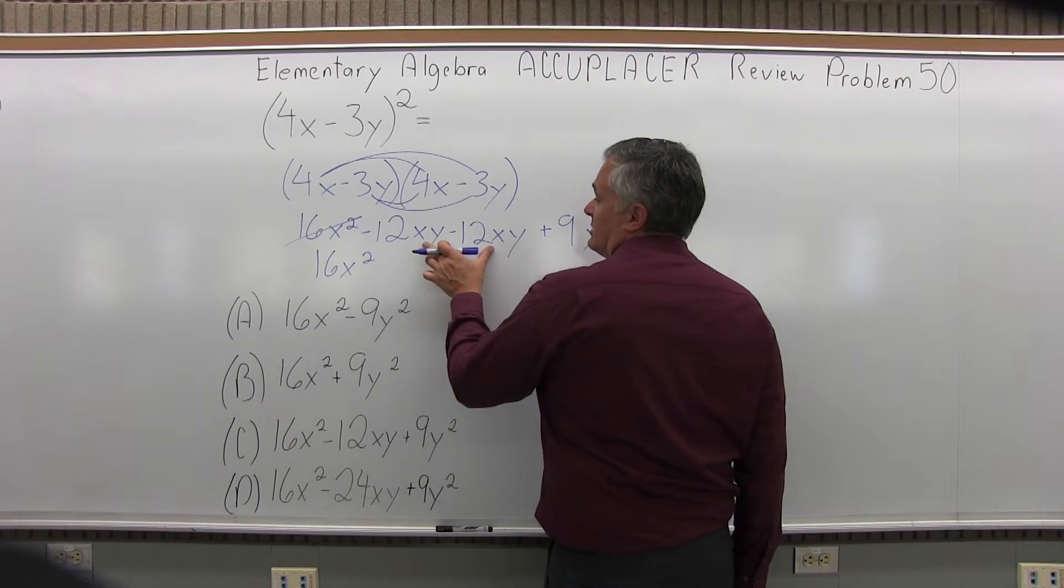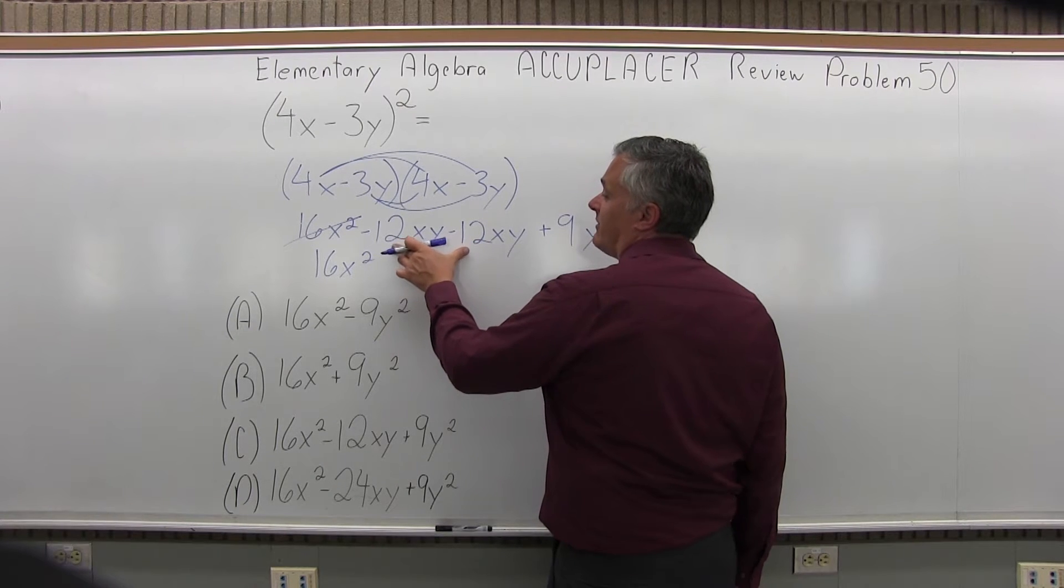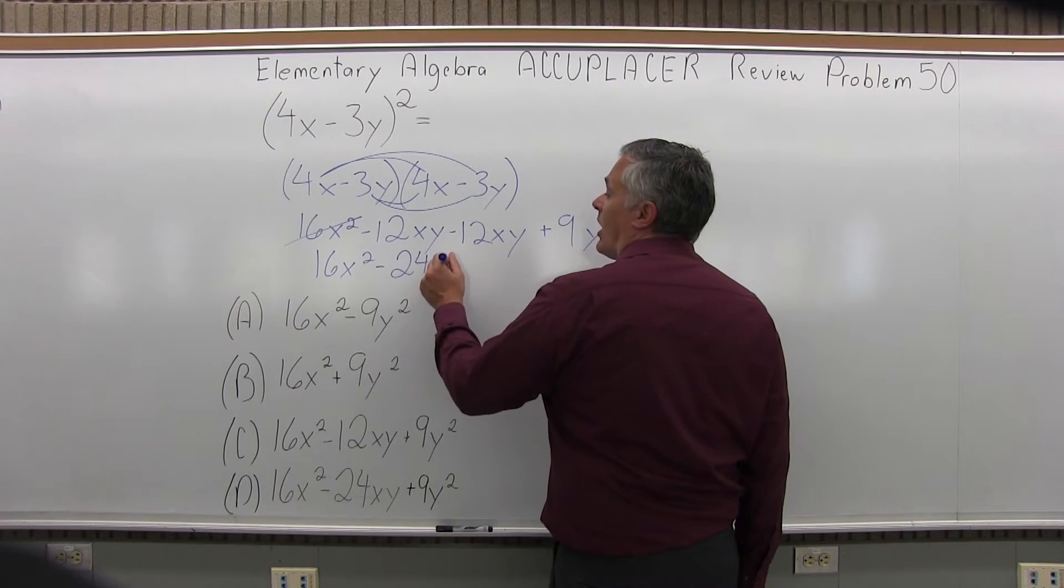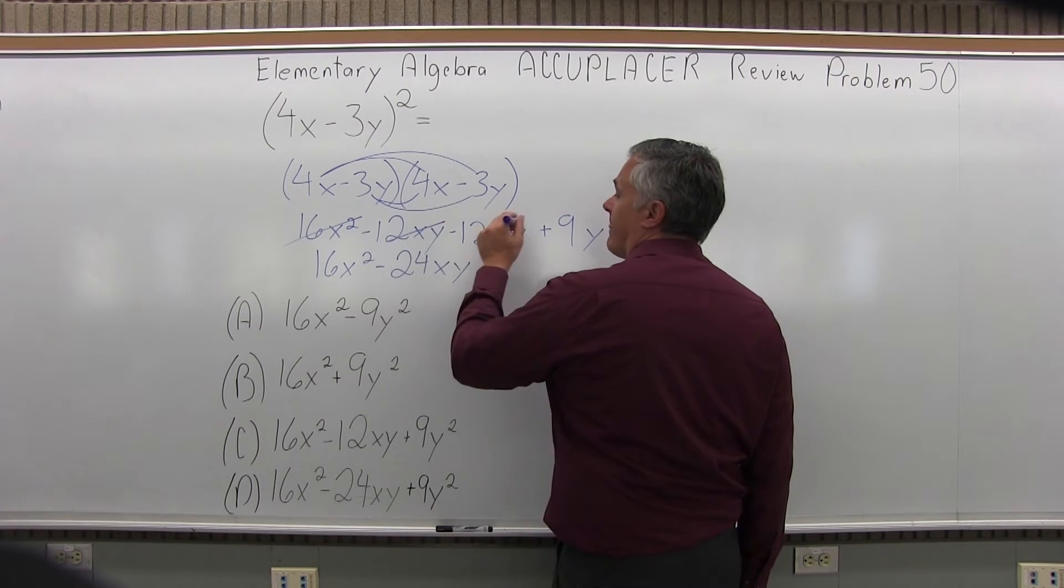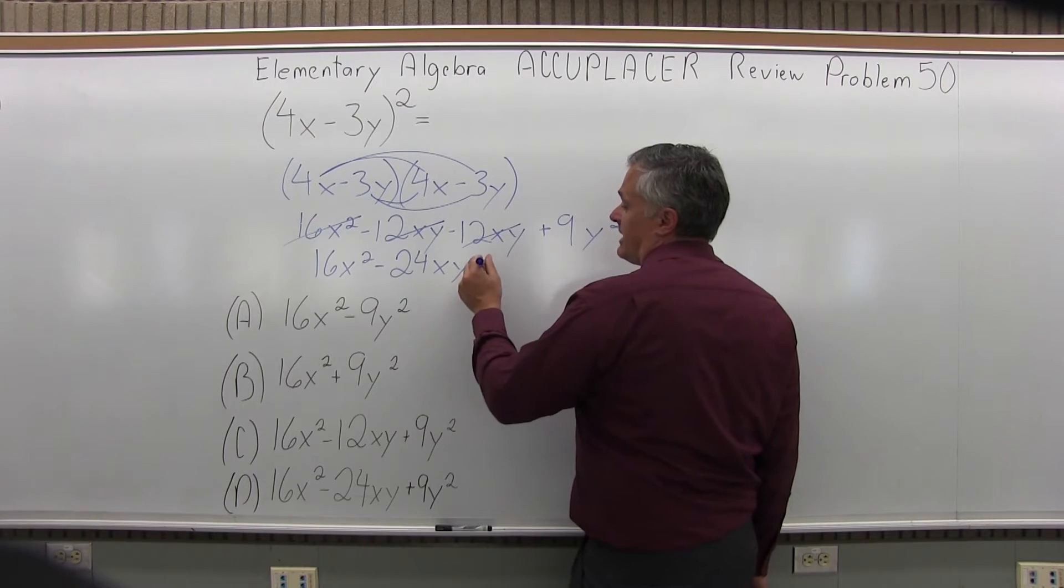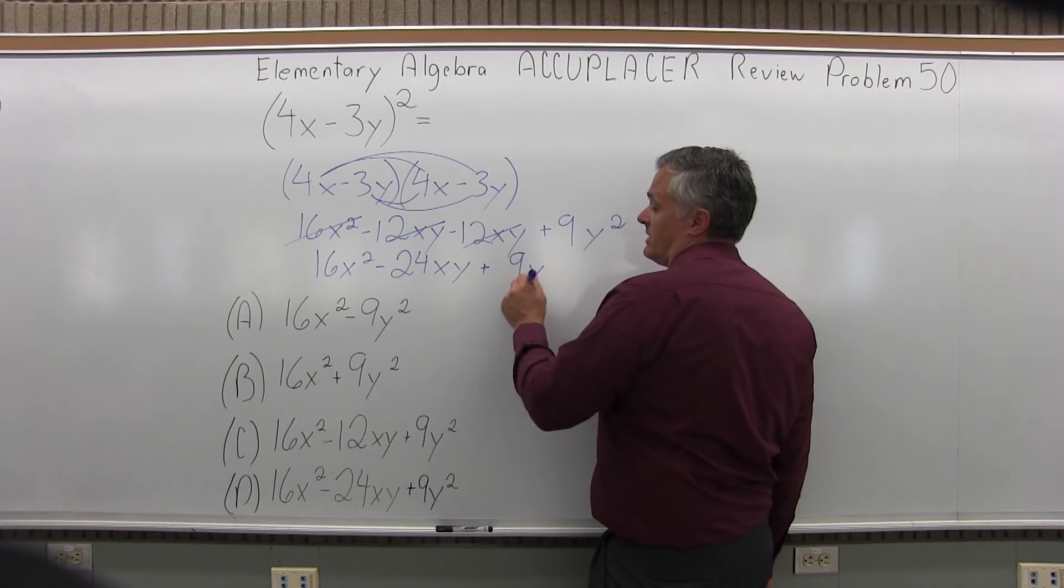But the xy's show up in two places. Negative 12 and negative 12 again. So I have negative 24xy. And then the 9y squared, there are no other y squares in my answer. So I'll just pull the 9y squared into my answer.